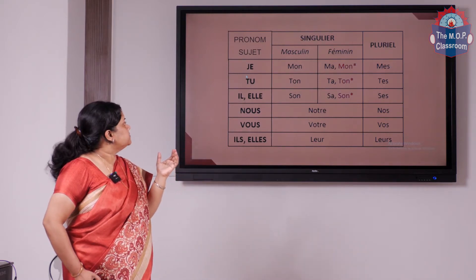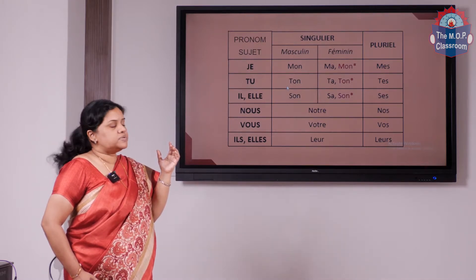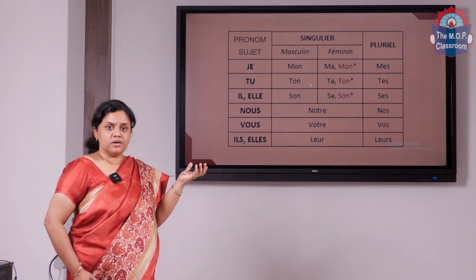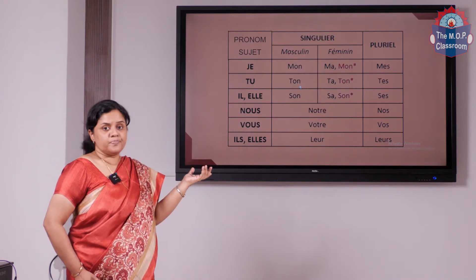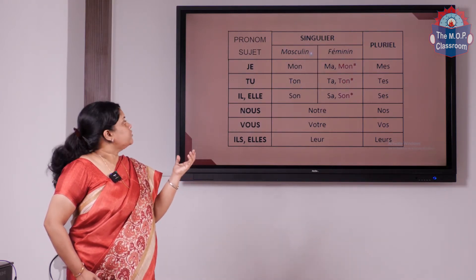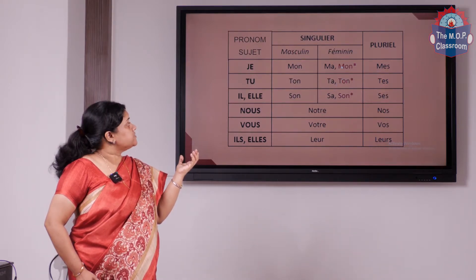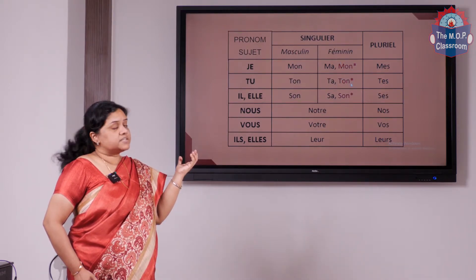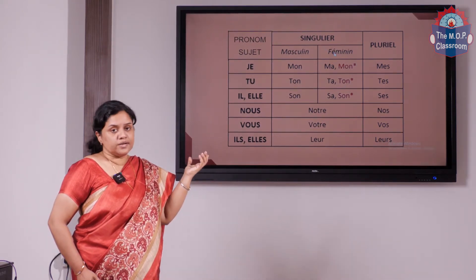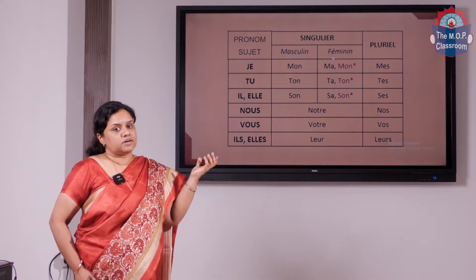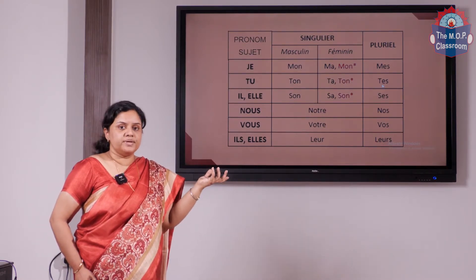The same thing applies for the subject pronoun tu. In English we just have one word: your. But in French, for masculine singular we use ton, and for feminine singular we use ta. Ton (given in asterisks) is used for a feminine singular word beginning with a vowel. Tes is used for masculine or feminine plural.